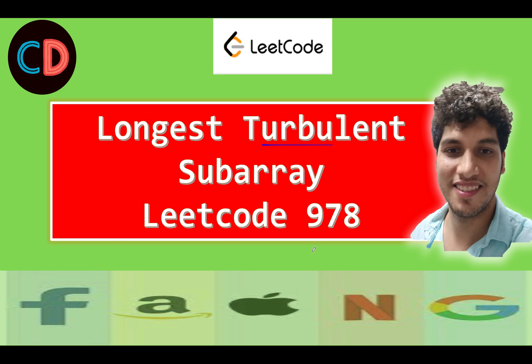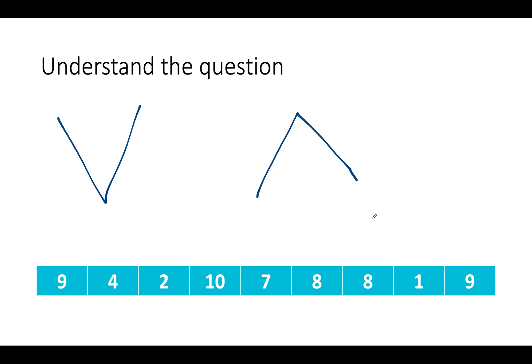Longest Turbulent Sub Array — LeetCode 978. It's a medium level question on LeetCode and I also feel the same. The approach that we will use to solve this question is similar to what we have done plenty of times in the past. So the main crux of the problem is in understanding the question. The question says we are given an input array of type integer. If you plot all the points on a graph or paper, you will see something like this.